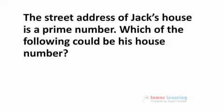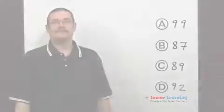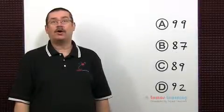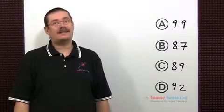The street address of Jack's house is a prime number. Which of the following could be his house number? A prime number is a whole number greater than one that is only divisible by one and itself.